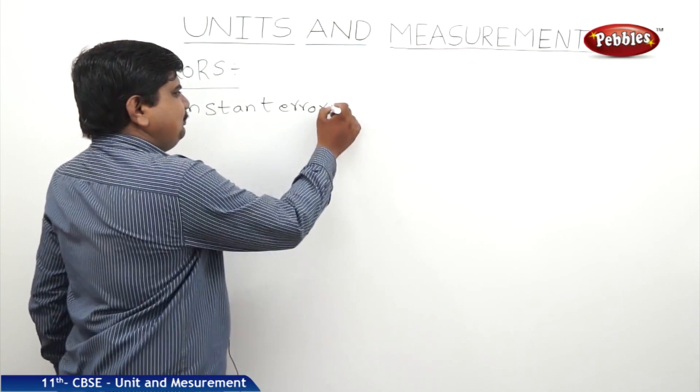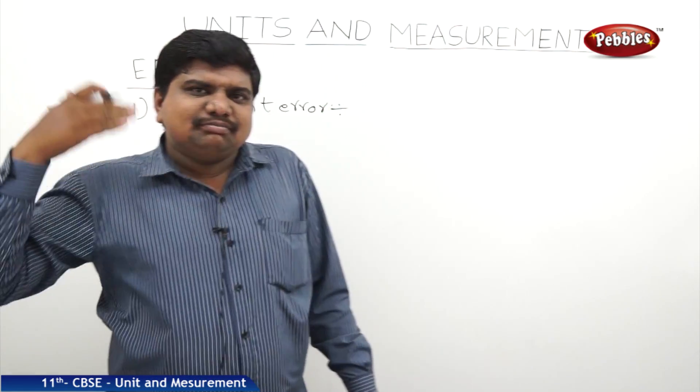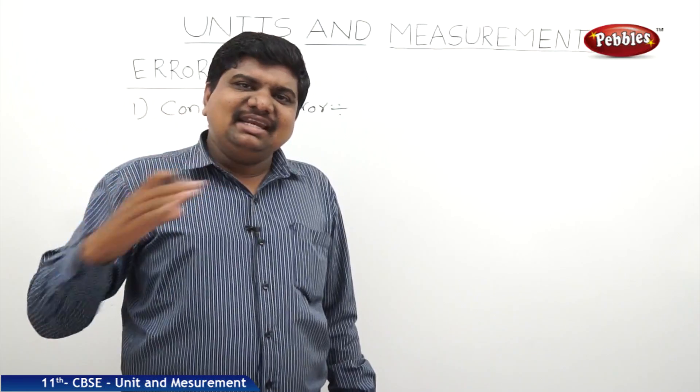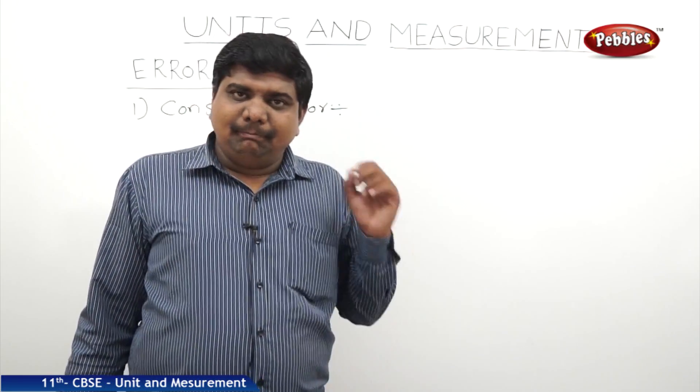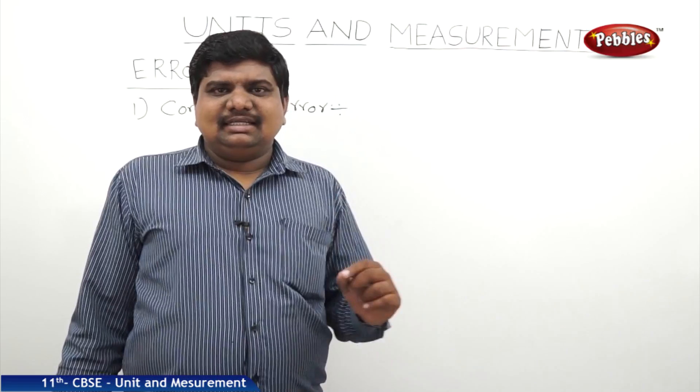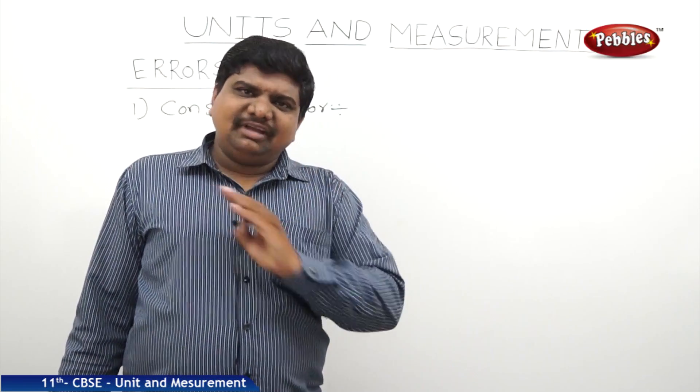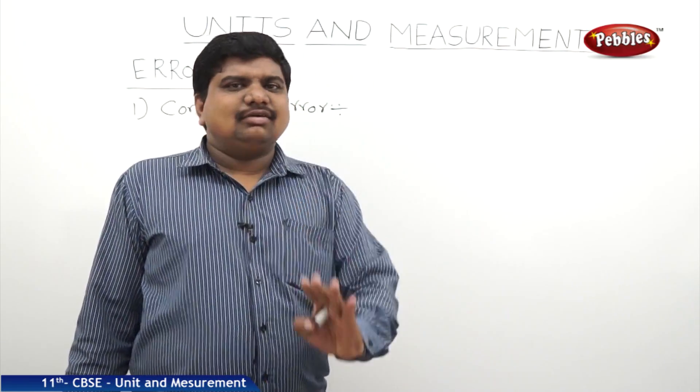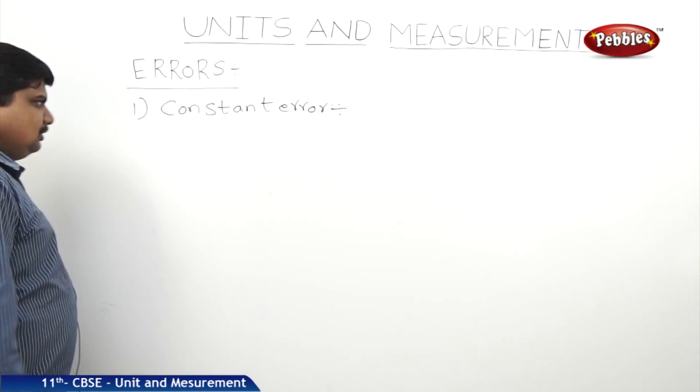Constant error means, suppose if a physical quantity was measured by using the same instrument for several times, but in that, if the error is also fixed constantly, that is called constant error. What is the explanation?